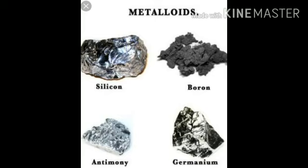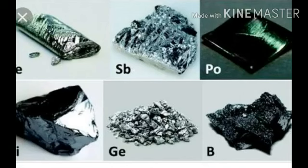Finally, we are going to see about metalloids. Metalloids exhibit the properties of both metals and non-metals. Silicon, arsenic, antimony, and boron are some examples of metalloids.